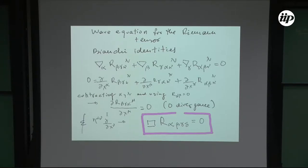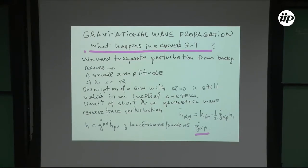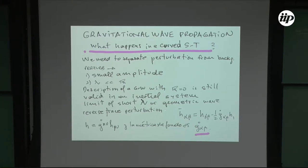We want to use this even for non-Einstein theories of gravity — that's the part I'm adding to what I said yesterday. Let's look at gravitational wave propagation in curved spacetime. We separate the perturbation from the background, assume small amplitude so the wavelength is much smaller than the curvature scale. In a local inertial system, R=0 is still valid. We write the metric perturbation in terms of a tensorial amplitude and a phase, where the amplitude changes slowly but the phase changes fast.